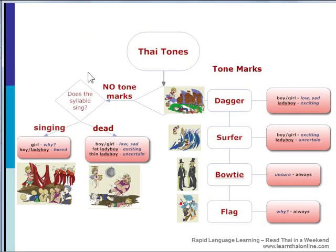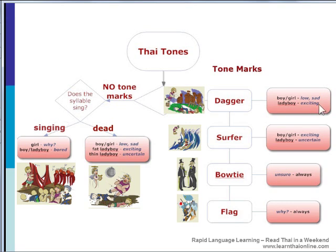To summarize: if there are no tone marks, first determine whether the word or syllable is a singing sound or is cut off. If it's a singing sound, then girls are question tone — why? — but boys and ladyboys have no tone at all. If the sound gets cut off, then boys and girls die straight away — sad tone. But a fat ladyboy is an exciting tone, while a thin ladyboy is uncertain — whoops. As for the tone marks: the dagger tone mark is similar to the scenario where everybody dies — boys and girls die instantly, sad tone — but ladyboys, regardless of whether they are thin or fat, is always an exciting tone. The surfer tone mark is kind of the opposite: boys and girls have the exciting tone — wow — but ladyboys are uncertain — whoops. And the bow tie is always uncertain, while the flag is always a question — why? Well, because.